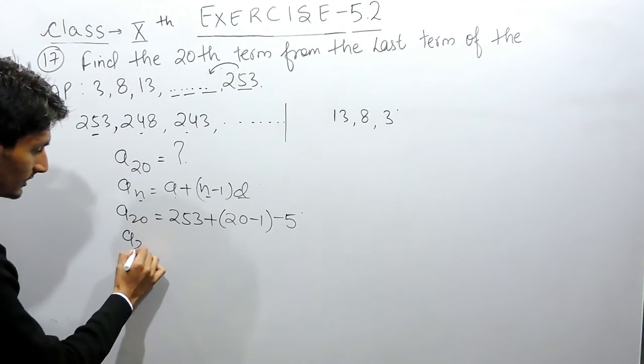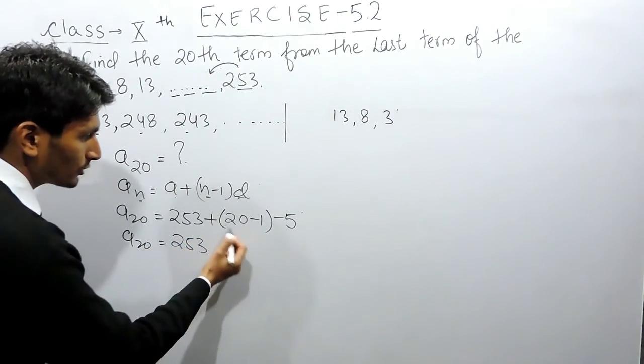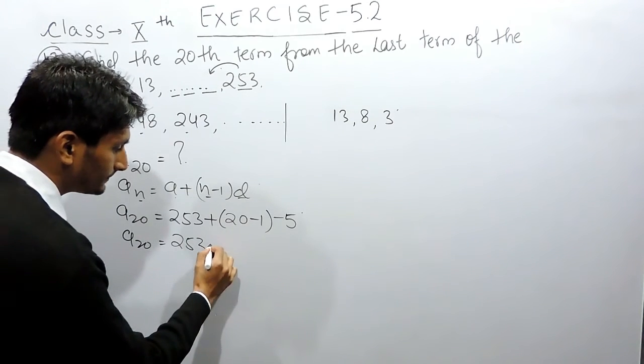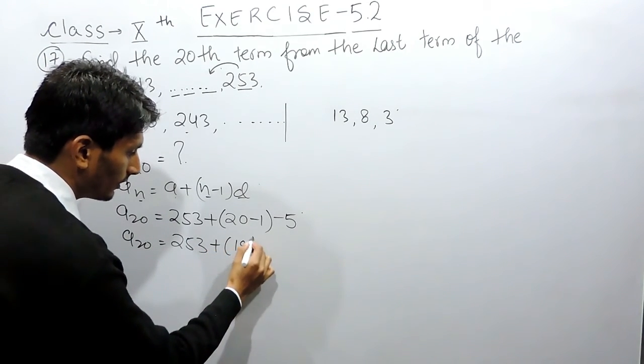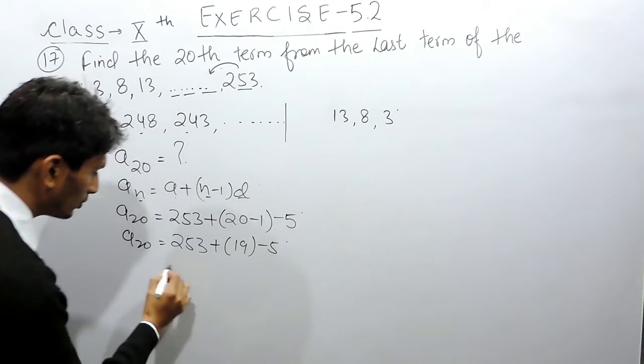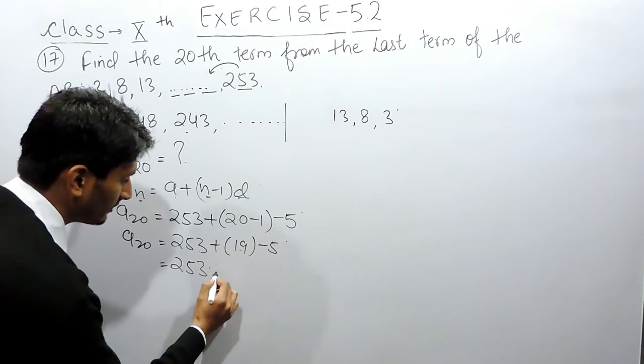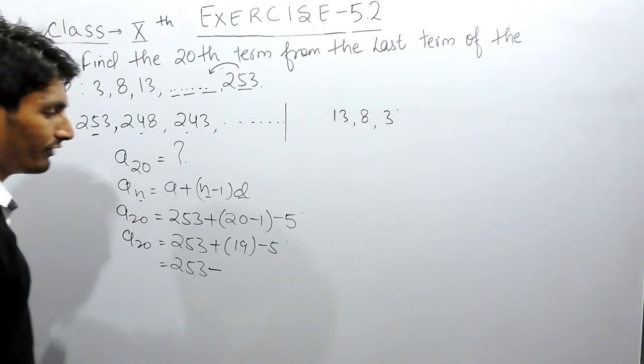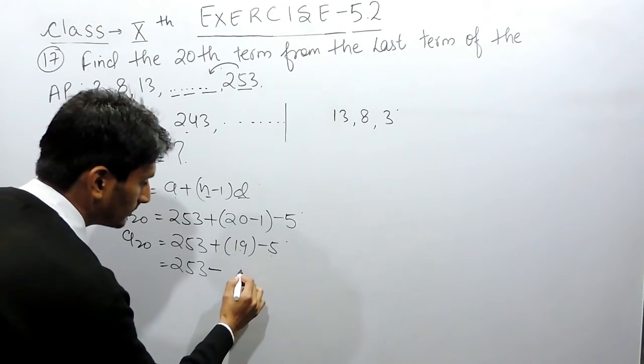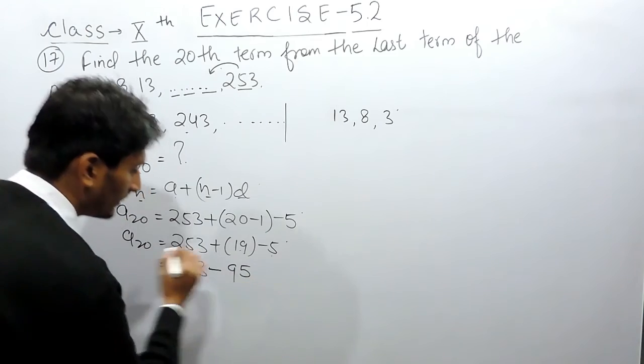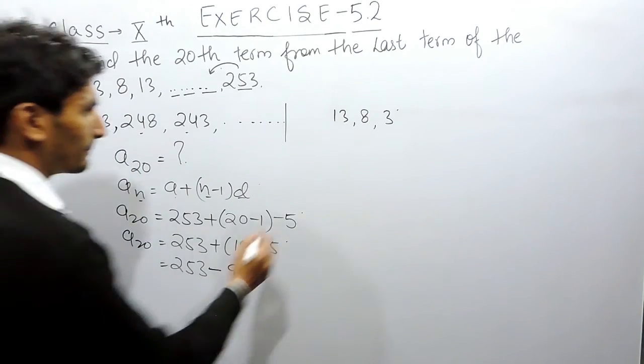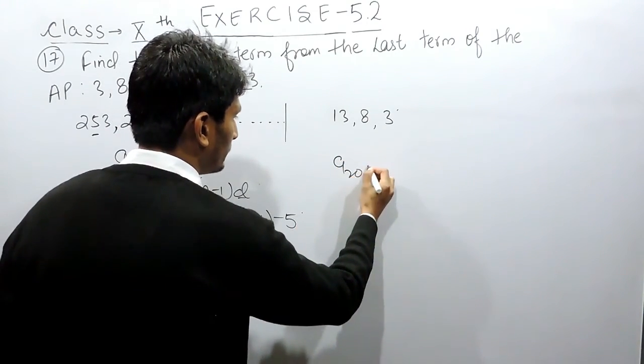So the 20th term will be equal to 253. This will be 19. 19 into minus 5 will be 95, so I can subtract. So the 20th term will be equal to 253 minus 95.